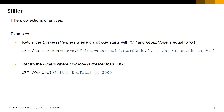For example, if we just want to search for business partner entities where CardCode starts with 'C_' and GroupCode is equal to 'G1', we apply the $filter query option with the startswith filter expression and the eq (equal) operator. In the second example, we want to get all the orders where total is greater than 3000, so we apply the filter with the greater-than operator.